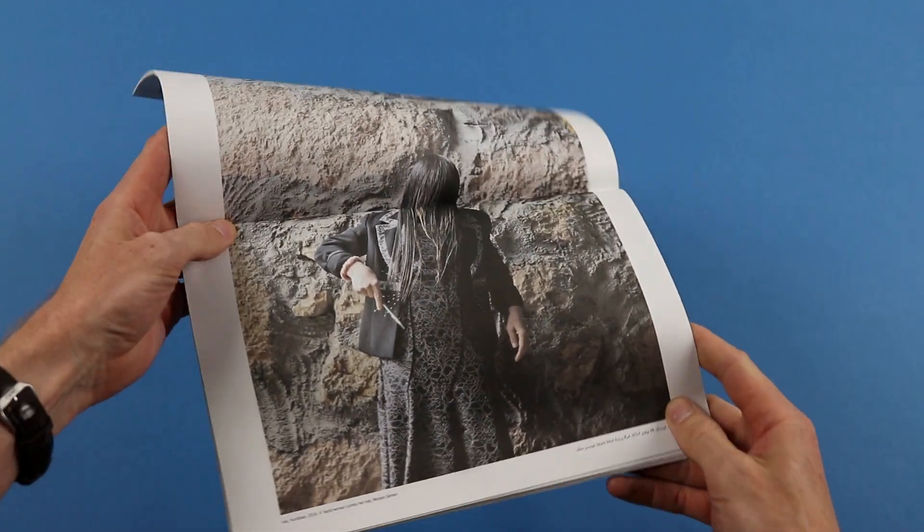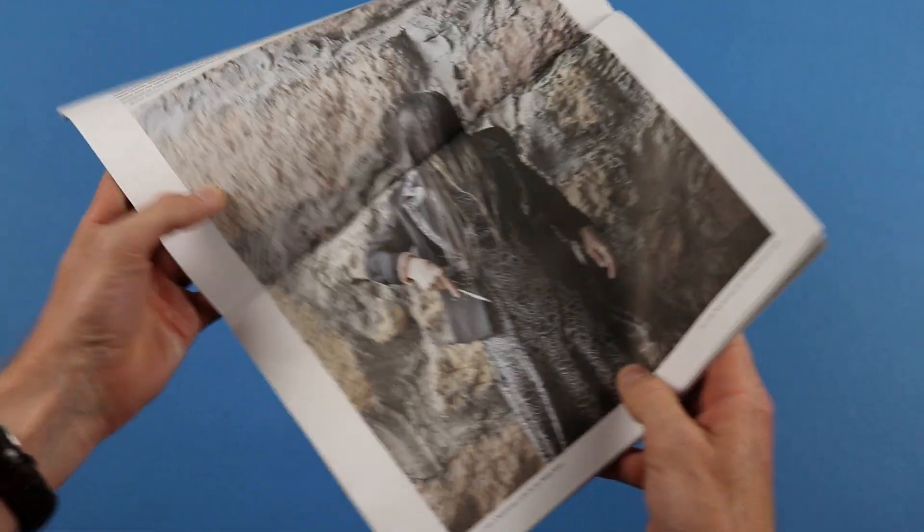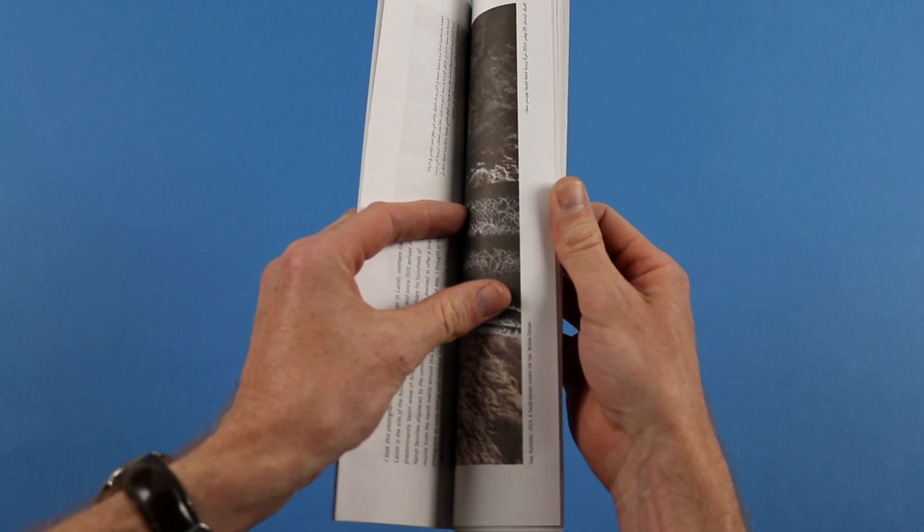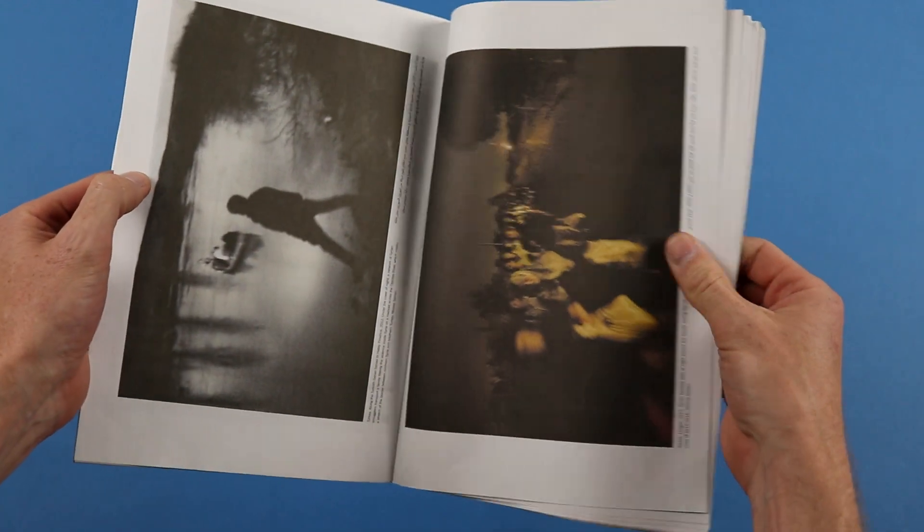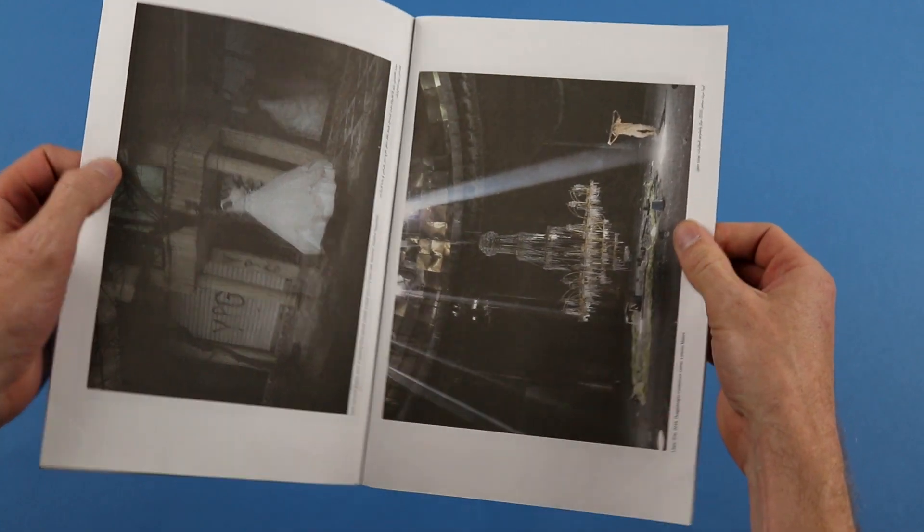And actually, it's images like this, so this is a Yazidi woman combing her hair, which just show this really personal, much smaller scale of the conflict that's going on there. And I think that that's what this magazine does so well.